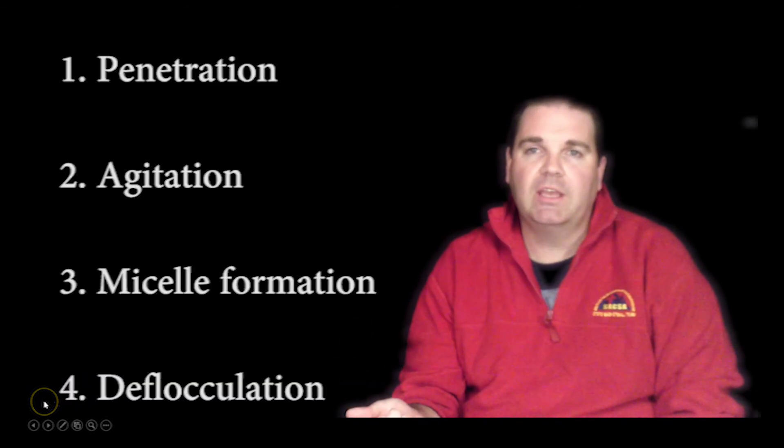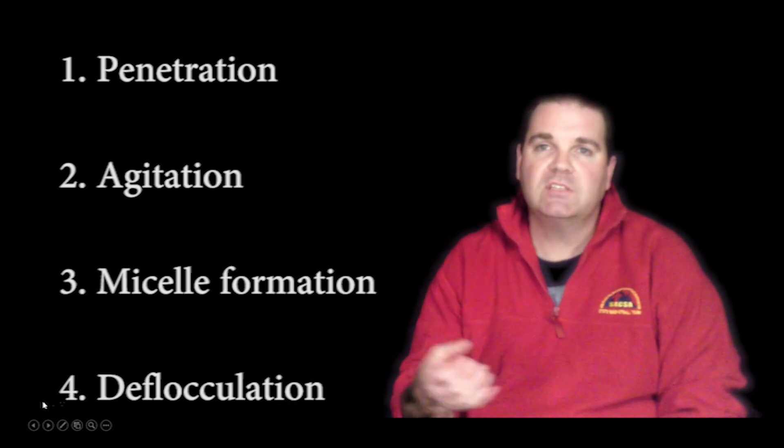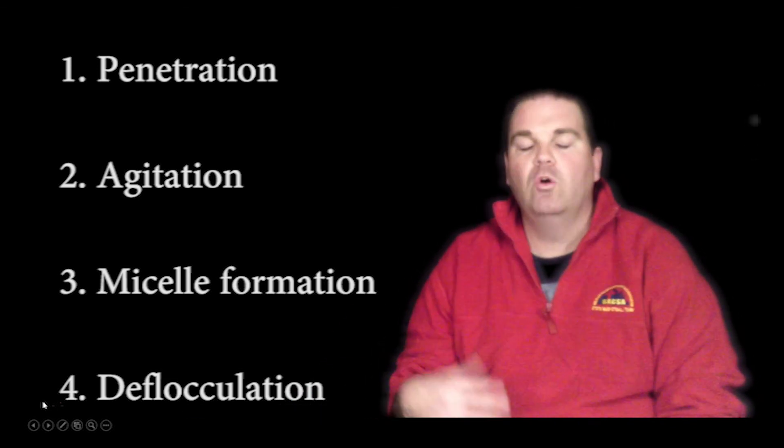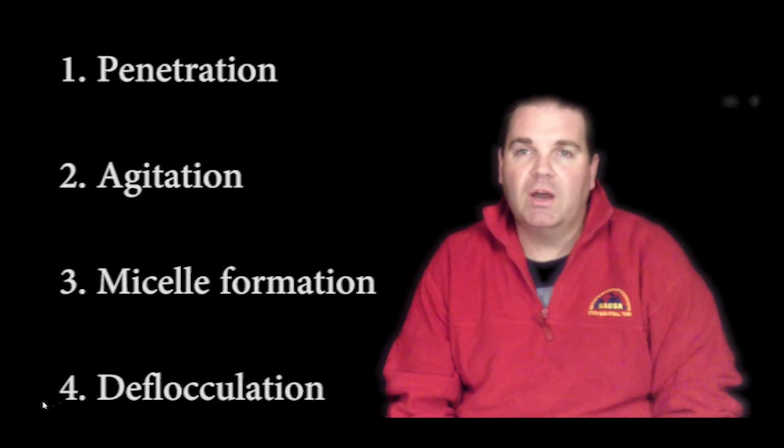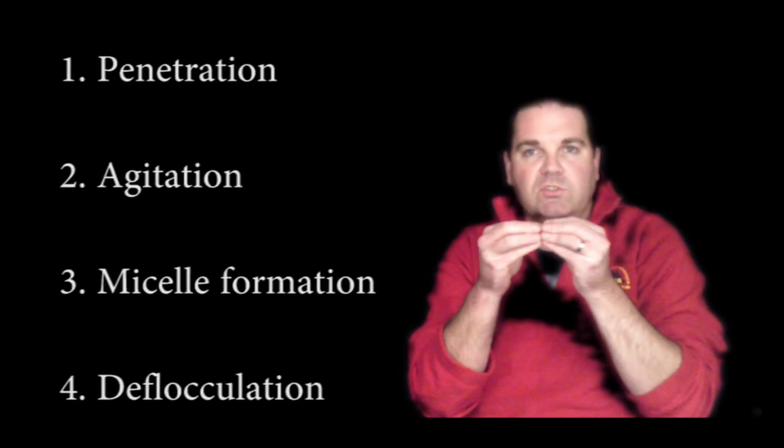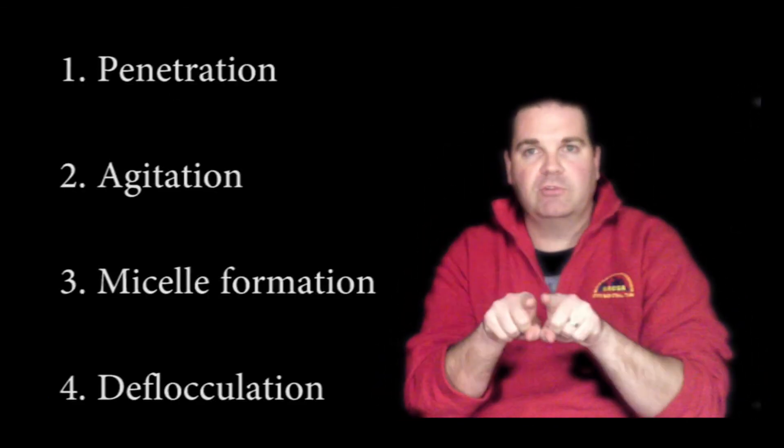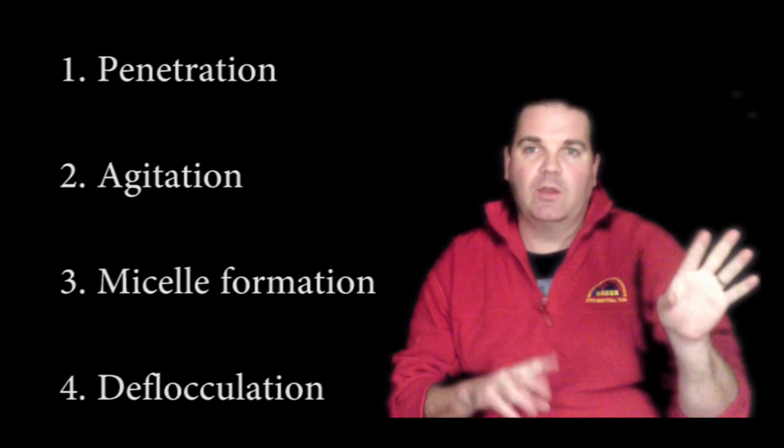So hopefully this has been a reasonably quick and easy demonstration for you on the four ways that cleaning agents work. So they penetrate the dirt particles, you agitate it to remove them from the surface and you've done that either by scrubbing your plate or by your washing machine spinning around. You then get the micelle formation where you get those non-polar tails which all clump in together with the polar head groups around the outside, and then finally you end up with deflocculation where they all repel each other.